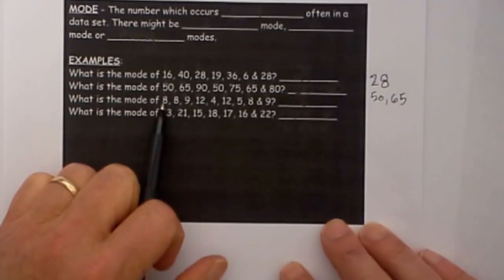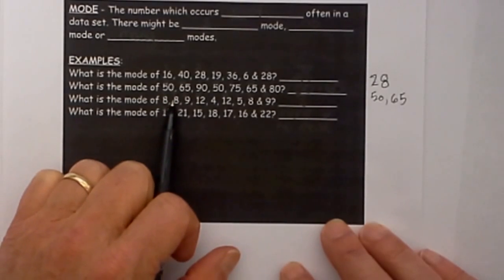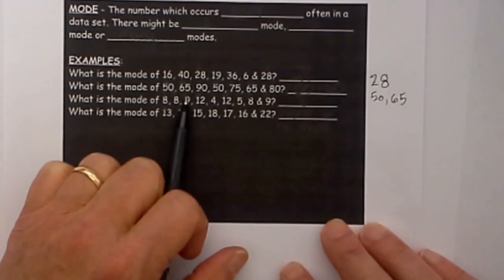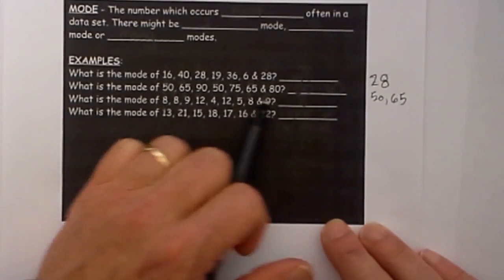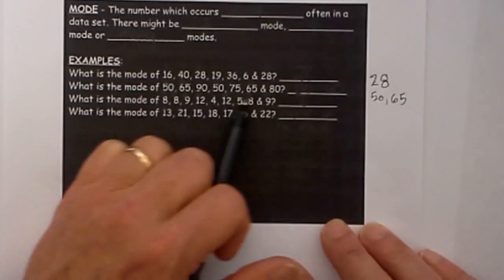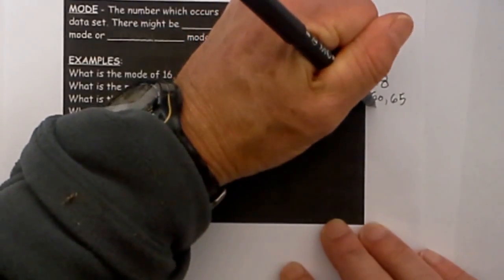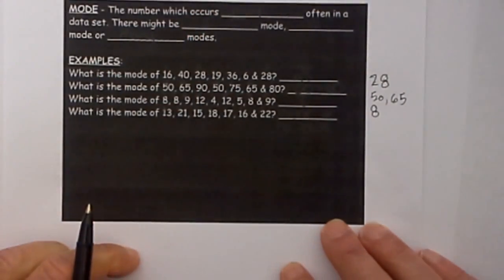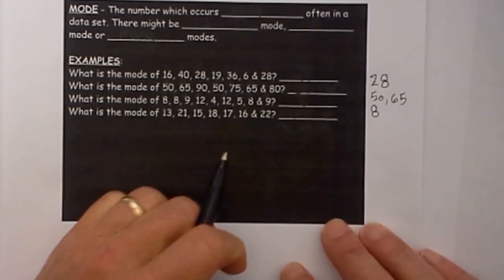This next one we have 8, 3 times, 9, 2 times, 12, 2 times, and 4, 1 time. So since 8 occurred 3 times in this example it will be 8.